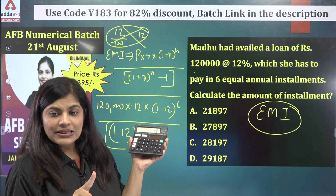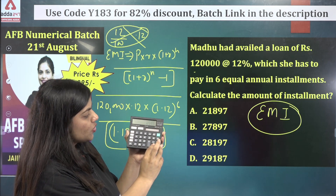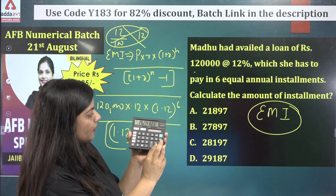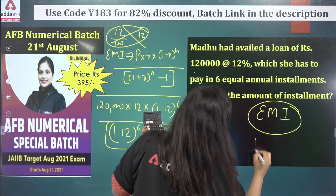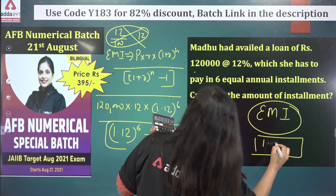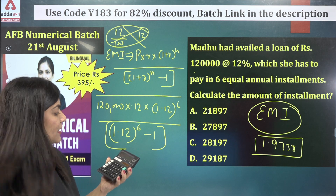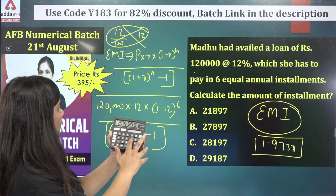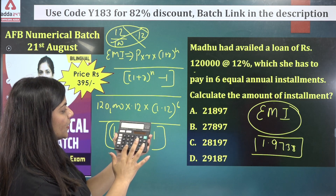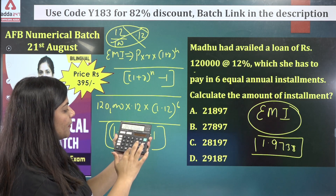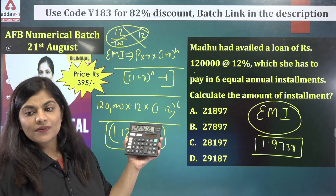How many times do you press equals? Since the power is 6, you press equals 5 times: 1, 2, 3, 4, 5. Whatever value comes up, note it down. Your answer will be 1.9738.